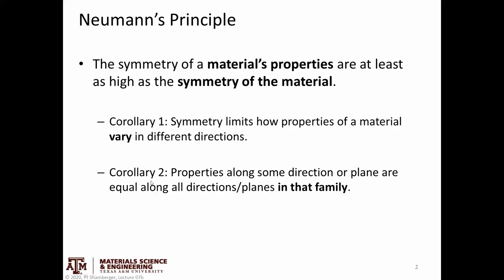So the second corollary is basically a different way to say the same thing. Properties along some direction or plane are equal along all directions or planes in that family. So we talked about families before. A family is a set of crystallographically equivalent directions or planes.